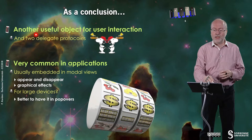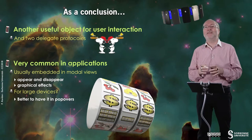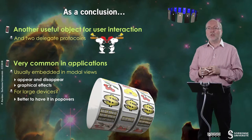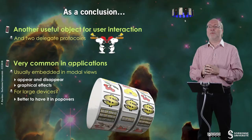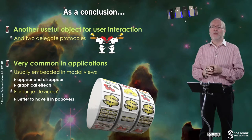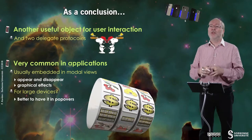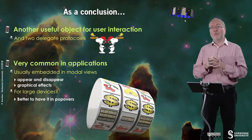The UI Picker View is another useful object for user interaction. Remember, it has two delegate protocols — this is a particularity of this object, and you may discover others with similar behavior. It is very common in applications and is usually embedded in a modal view that can appear and disappear. For example, a popover is a modal view, and on large devices when the picker is triggered by a button tap, it is best practice to present it inside a popover. Thank you for your attention, see you later.